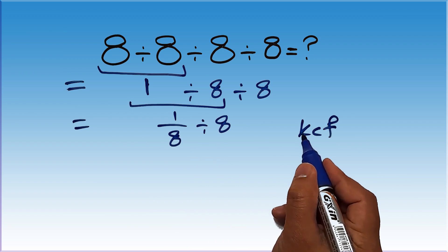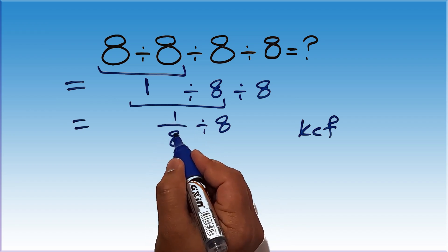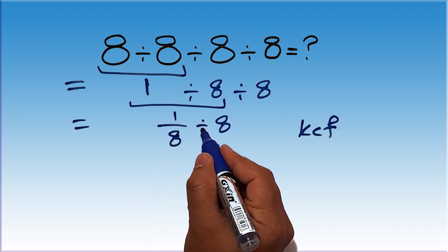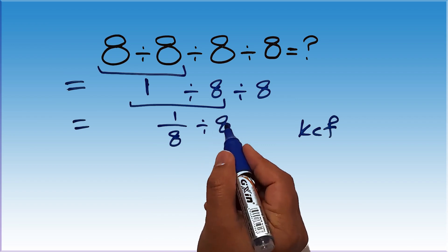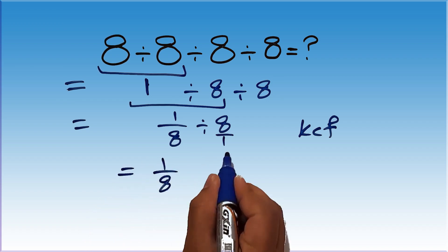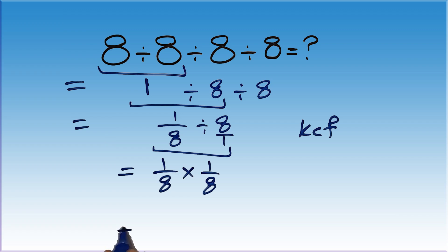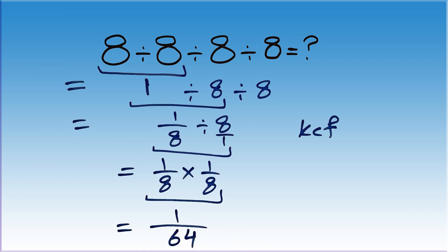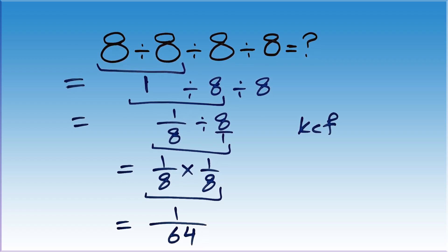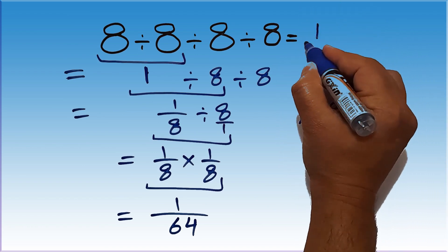K stands for keep, C stands for change, and F stands for flip. Keep the first fraction, change division to multiplication, and flip the second fraction. Our second fraction is 8 over 1. So we write 1 over 8 times 1 over 8, which equals 1 over 64. Our final answer to this problem is 1 over 64.